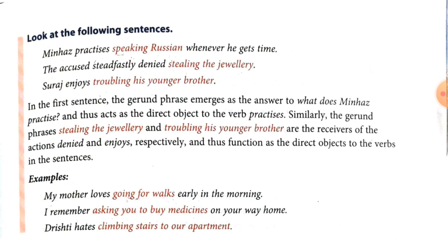In the first sentence, Minha's practice is what? Speaking Russian — so here, speaking Russian is the object of the verb practices. Second sentence: The accused steadfastly denied — denied what? Stealing the jewellery — so, stealing the jewellery is the object of the verb denied. And in the third sentence, Suraj enjoys troubling his younger brother — troubling his younger brother is the object of the verb enjoys.